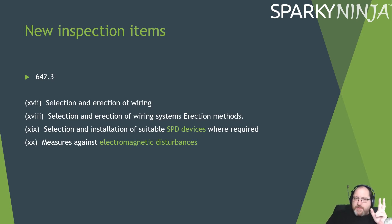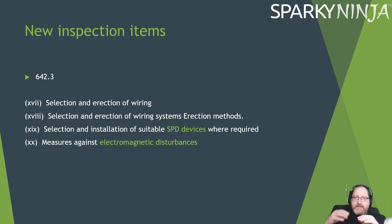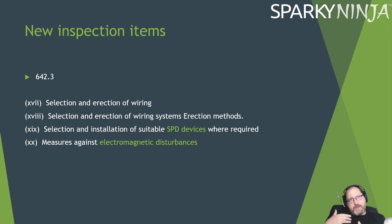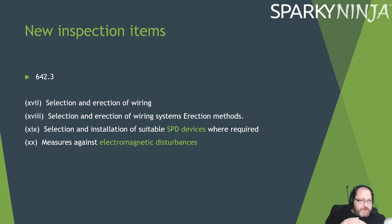We have a couple of new inspection items at 642.3. The old list is there, but they've added at the end: the erection method has been changed to selection and erection of a wiring system's erection method. We've also got — because they were introduced in Amendment 3 — selection and installation of suitable SPD devices where required, and measures against electromagnetic disturbances. So those have been added to the inspection items.